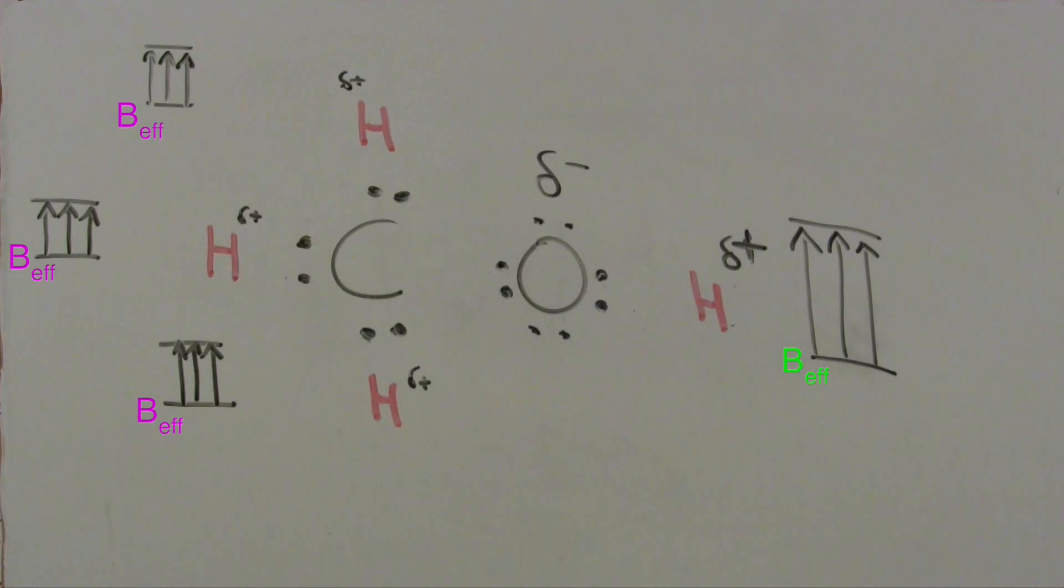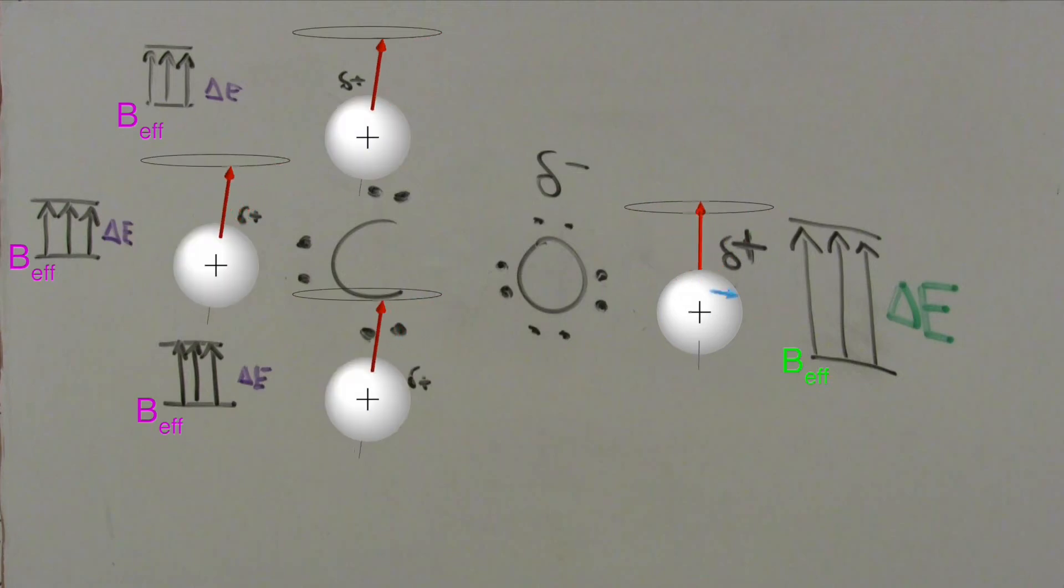Since the interaction strength between a nucleus and its external field corresponds to an energy gap, and an energy gap corresponds to the precession of the nucleus, this hydrogen nucleus precesses fast, while these three precess slower.